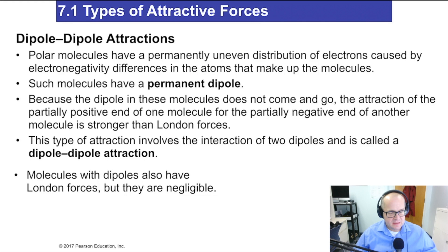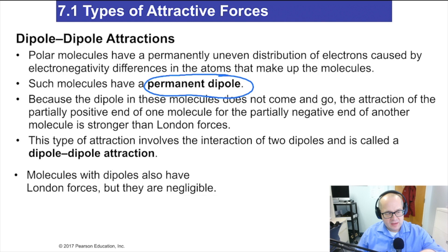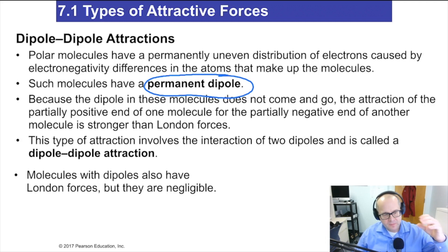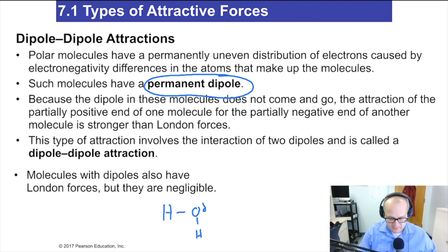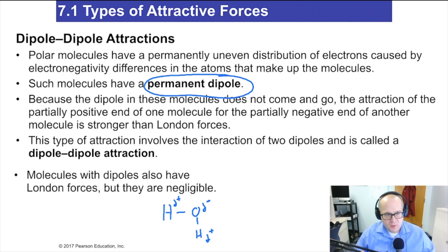Dipole-dipole attractions are not the same as London forces. London forces are temporary dipoles set up from the uneven distribution of electrons. A dipole-dipole interaction, or dipole-dipole attraction, is a permanent dipole — it's never leaving. Recall from Chapter 4 or 5 when we talked about polarity and shapes of molecules: polar molecules such as water have a permanent delta negative and permanent delta positives on the hydrogens. This is a permanent dipole. Molecules that have dipoles also use London forces, but they are negligible — not that significant. A permanent dipole is required.